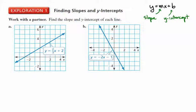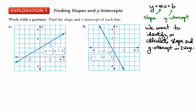We want to be able to identify or calculate slope and y-intercept in two different ways. First, we want to be able to identify them from the equation itself. And second, we want to be able to identify them from the graph itself, and then to show that what we calculate from the graph and what we calculate from the equation are really the same thing.